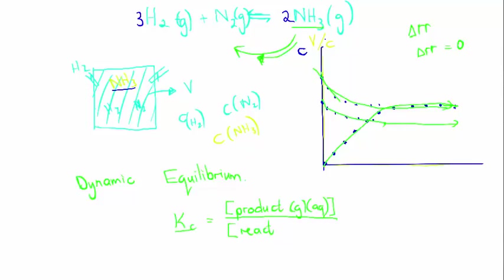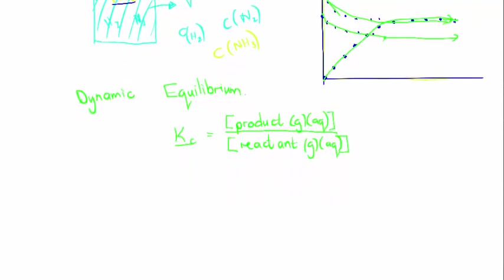The Kc value only applies — I only have my equilibrium number when I've reached equilibrium. I only look at gases and aqueous solutions, for a simple reason: that's the only thing I can work concentration out for. Because concentration is moles over volume, and I'm only working with volume when I have gas or an aqueous solution.